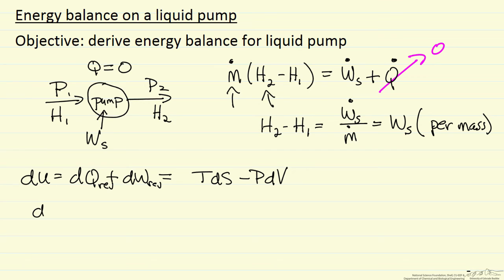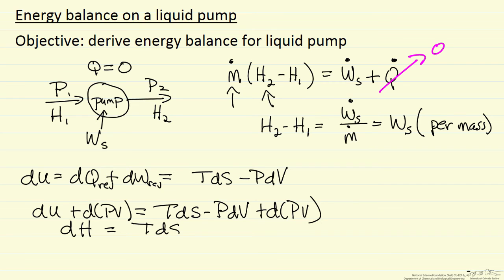Now what we're going to do to get enthalpy is add the PV term to both sides of this equation, and then we can simplify. Left side U plus PV, this is the differential of enthalpy. The right side TDS. If we expand this term as PDV plus VDP...